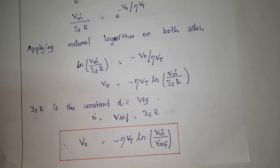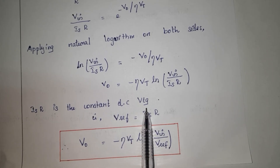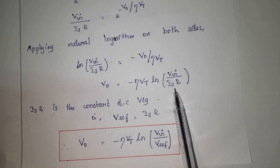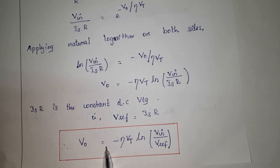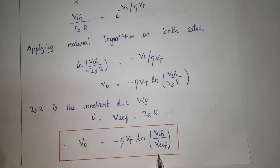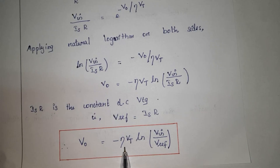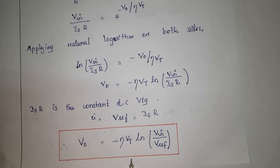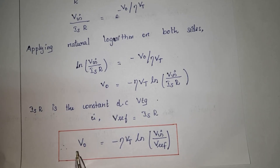Here IS·R is a constant DC voltage, denoted as V_reference, where V_reference = IS·R. Therefore the output voltage V0 = −η·VT · ln(Vin / V_reference). The negative sign indicates a 180-degree phase shift between input and output. Thus V0 is a function of the logarithm of the input voltage Vin.